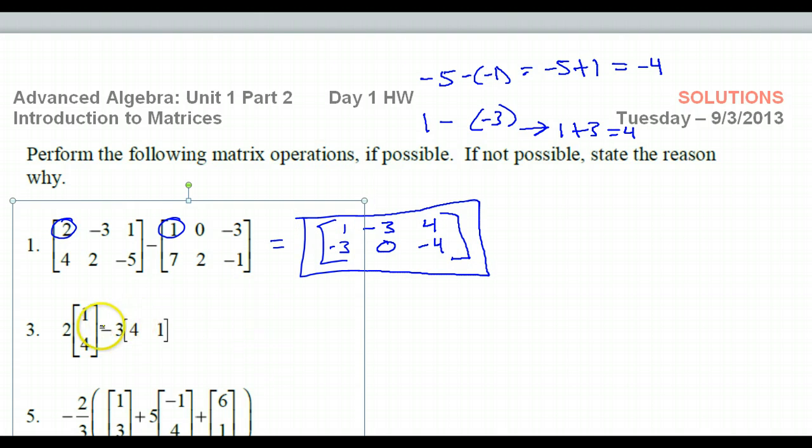Number 3. Well, we've got some multiplication to do first. So multiplying by a number is just going to be like this. So 2 times 1 is 2, 2 times 4 is 8. And then here, if I did 3 times everything, then that would be minus 12 and 3.